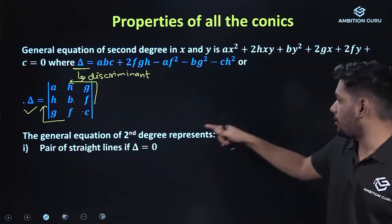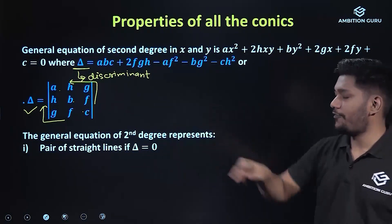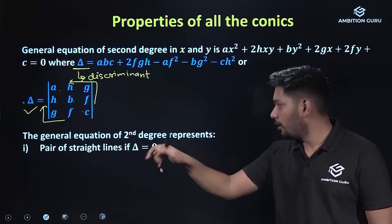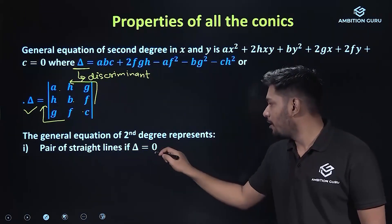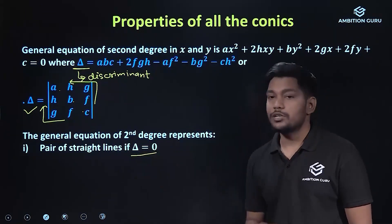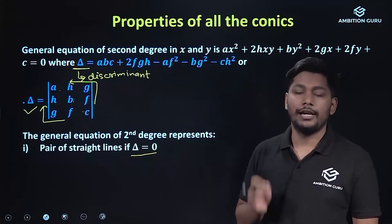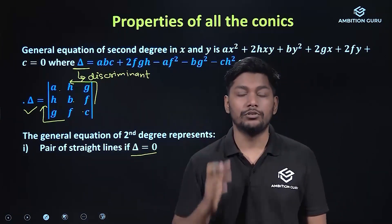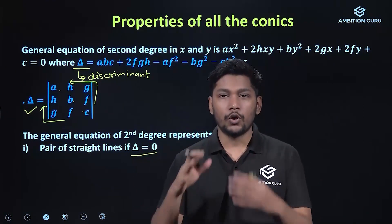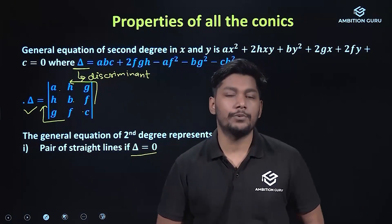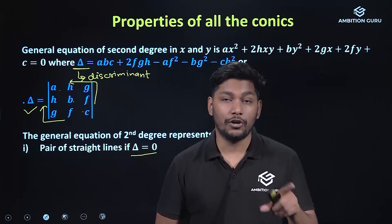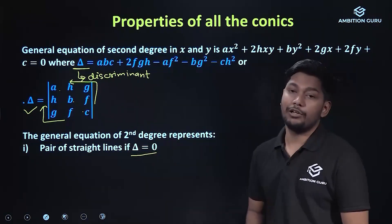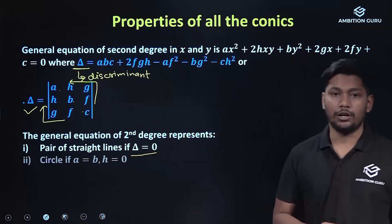The general equation of second degree represents a pair of straight lines when the delta value equals 0. So, the conic section represented is a pair of straight lines when delta = 0.